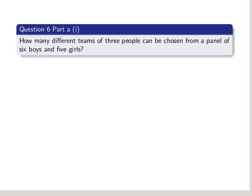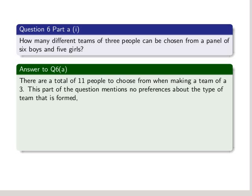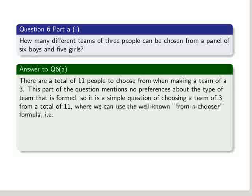Part A: How many different teams of 3 people can be chosen from a panel of 6 boys and 5 girls? Okay, there are a total of 11 people to choose from when making a team of 3. This part of the question mentions no preference about the type of team that is formed, so it's a simple question of choosing a team of 3 from a total of 11.